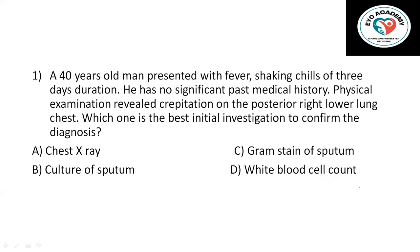Let's discuss. The patient is 40 years old, presented with fever and shaking chills of three days duration, which is acute, and he has no past medical history. In addition to history, he has a physical finding — crepitations on the posterior right lower lung. So which is the best initial investigation to confirm the diagnosis? From this history and physical examination you need to determine the top differential diagnosis, then decide which investigation to send first.